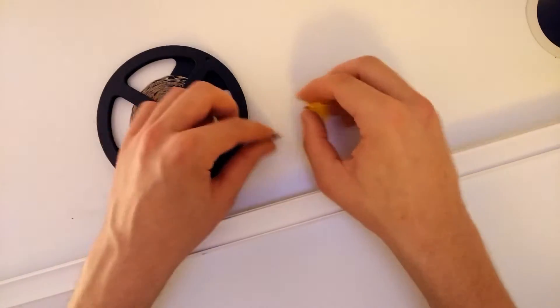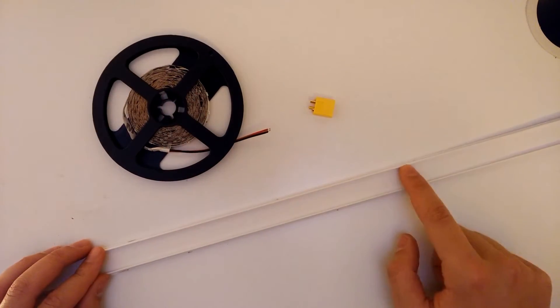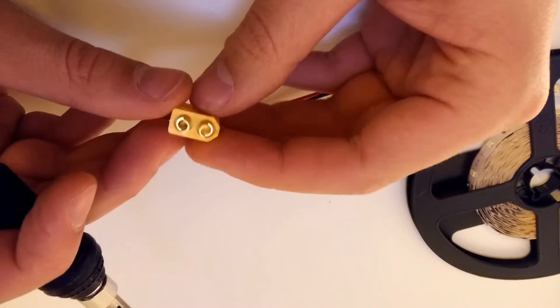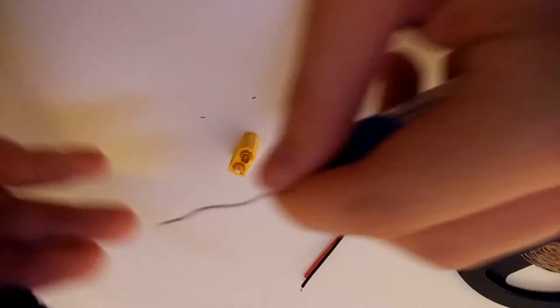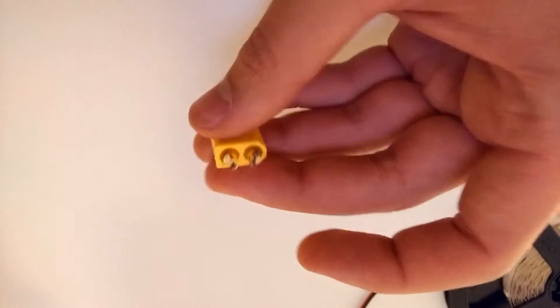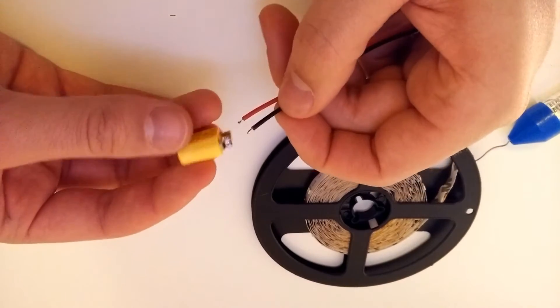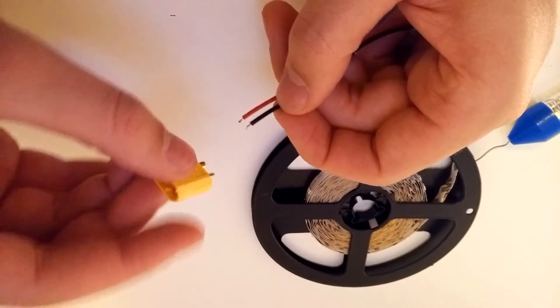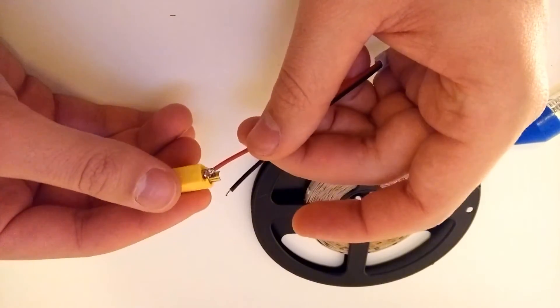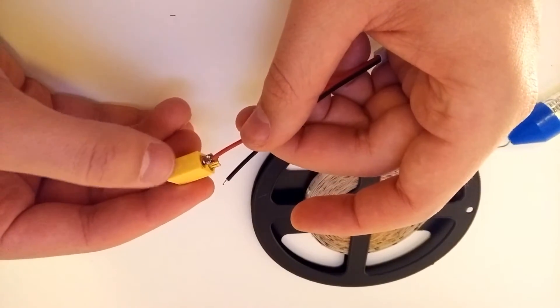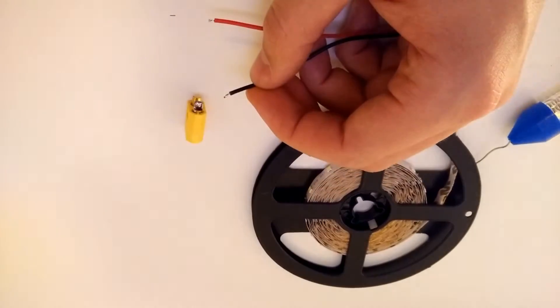First of all, we're going to go ahead and solder the XT60 plug onto here, and then we'll attach the LED strip onto our trunking. The first thing you want to do is add some solder to each of these pins. Finally, you're going to want to attach the wires onto the XT60 plug. Remember, this curved surface of the plug is the negative one, so the black is going to go to the curved surface, and then the red is going to go to the flat surface, which is positive on the bottom there.